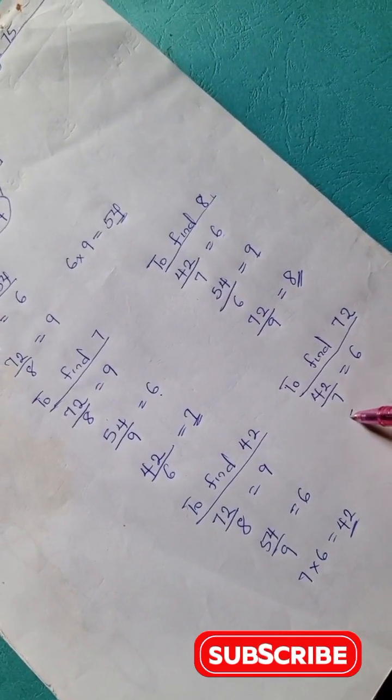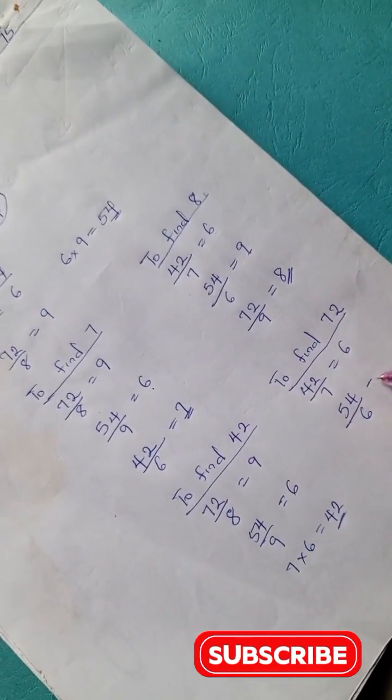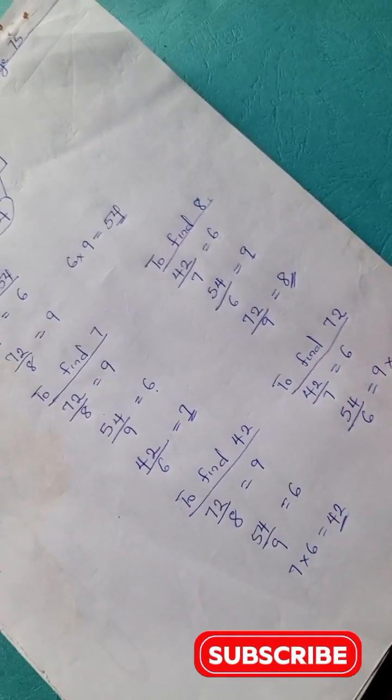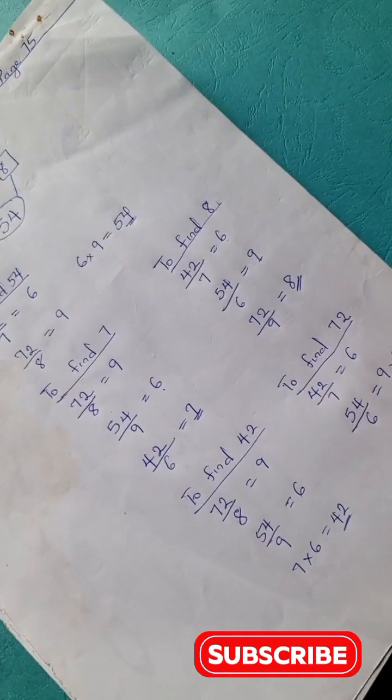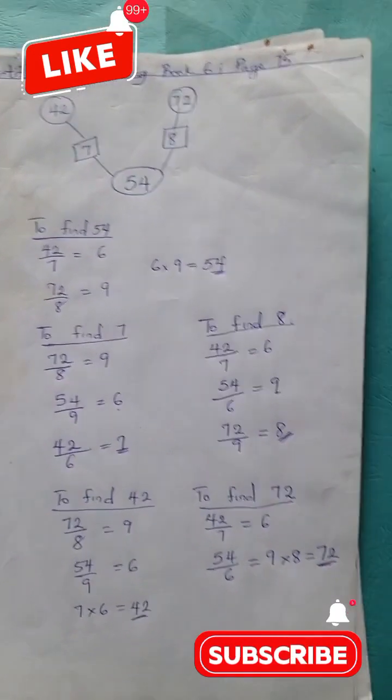And 54 divided by 6 is 9. 9 times 8 is 72. So that is it for this example.